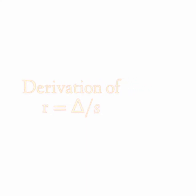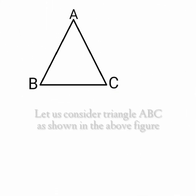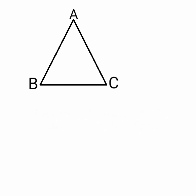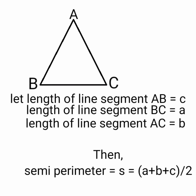Derivation of r is equal to delta by s. Let us consider triangle ABC as shown in the above figure. Let the length of line segment AB equal C, the length of line segment BC equal A, and the length of line segment AC equal B. Then the semi-perimeter of triangle ABC is equal to S, which equals A plus B plus C divided by 2.